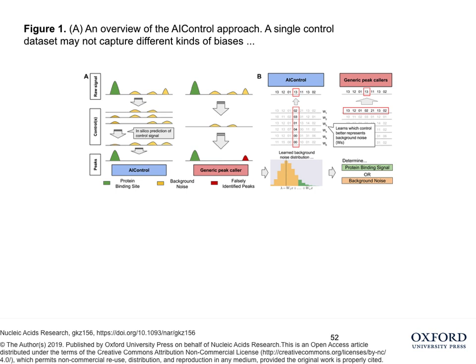Finally, the fourth article displays the hype for artificial intelligence approaches. It uses an AI approach, having learned from numerous publicly available ChIP-seq control experiments, to produce a better background noise distribution. Using that AI as a control sample augments the accuracy of peak callers.